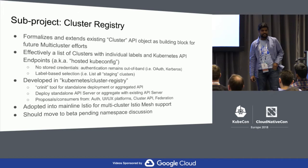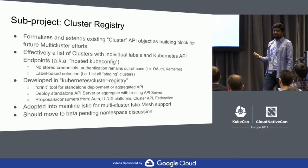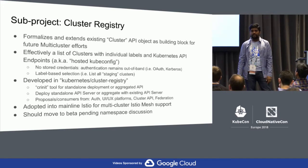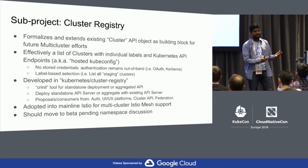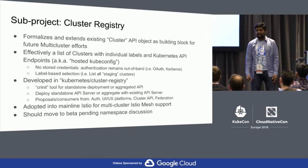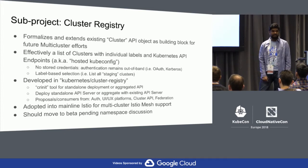Cluster registry: one of the common use cases was just a list of clusters. It's an API server with a cluster resource, and you can run kubectl create cluster, get cluster, list cluster. You can add labels so you can get a list of all staging clusters or all prod clusters. You can add RBAC rules — developer A gets clusters A and B, developer B gets B and C. You can build all those primitives over this using all existing Kubernetes tools. It's a standard Kubernetes API server.